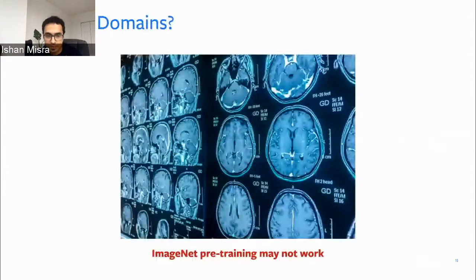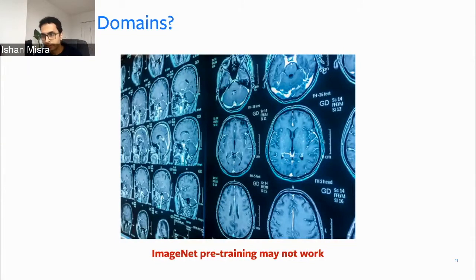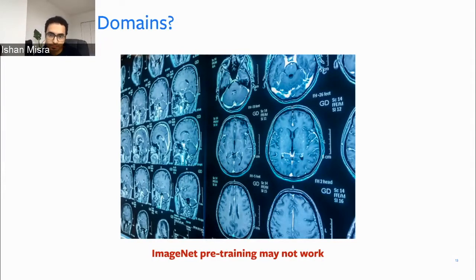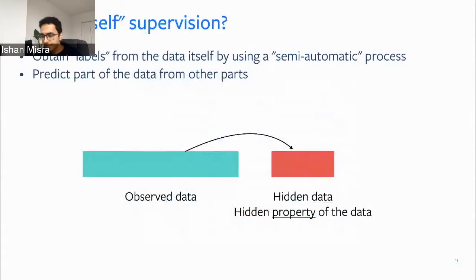What about different domains, like medical imaging, where getting labels is really difficult? You can't rely on just any person to give you a label — there are few experts who can actually label these kinds of images. So this is the motivation for using self-supervised learning.